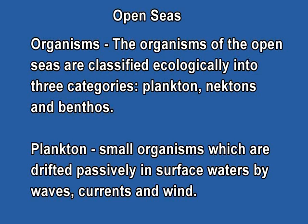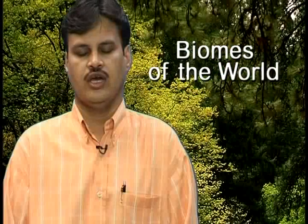Now we can discuss the animal community of the open seas. The organisms of open seas are classified ecologically into three categories. The first are plankton. The planktons are small organisms that drift passively on the surface of the water — they are helpless and move according to the currents of the water and wind.